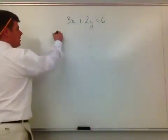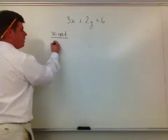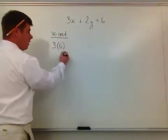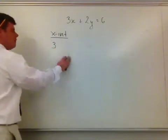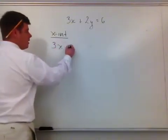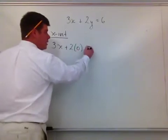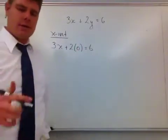For the x-intercept, I'm going to take 3x + 2(0) = 6. So, again, for the x-intercept, what I'm implying here is that y is always equivalent to 0.